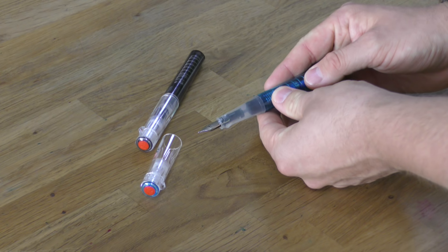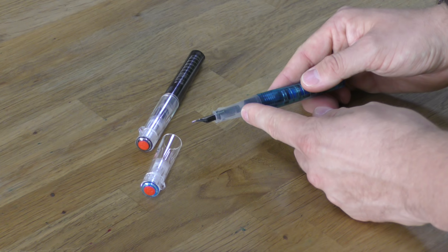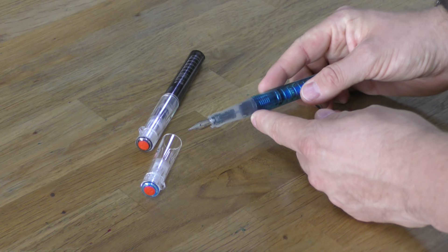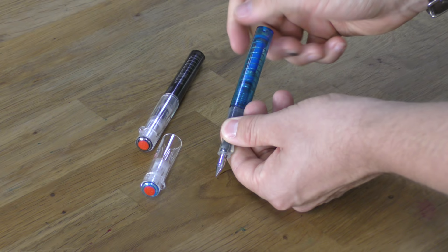The nib is available in five sizes and we'll show you that in more detail later on in the video. The grip section is the same shape as the Eco, so it's triangular, but it is longer in length and tapers out to a wider diameter. Again, we'll show you a comparison later on in the video.